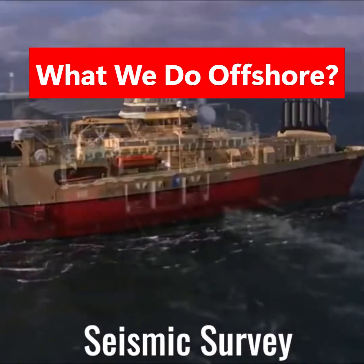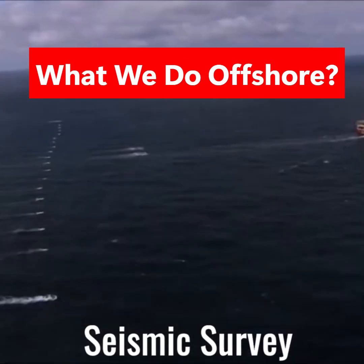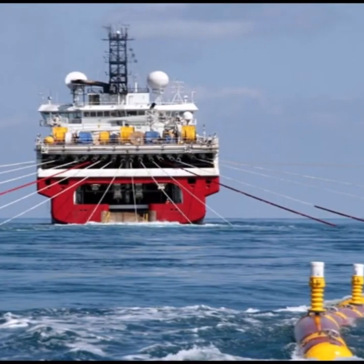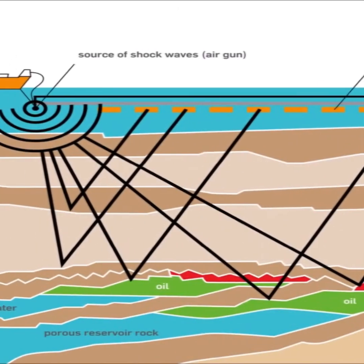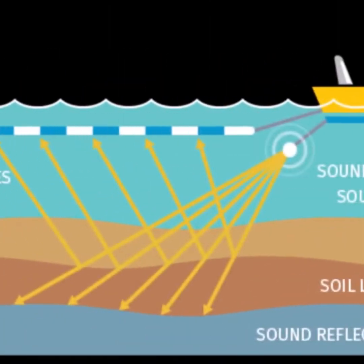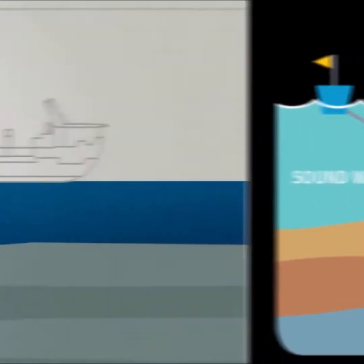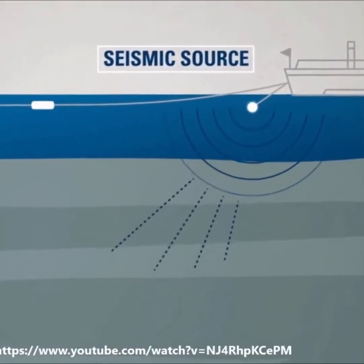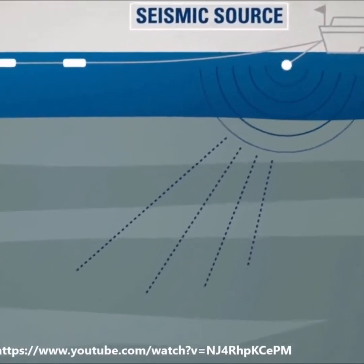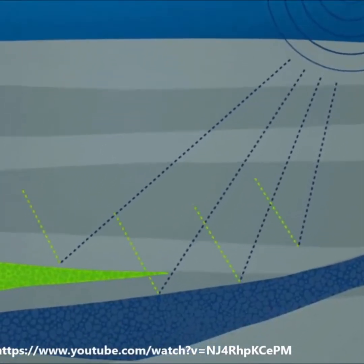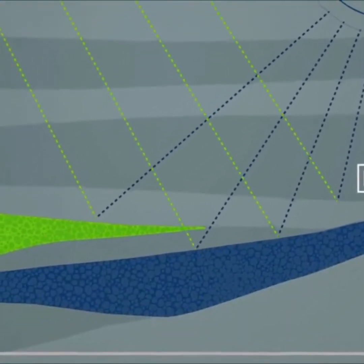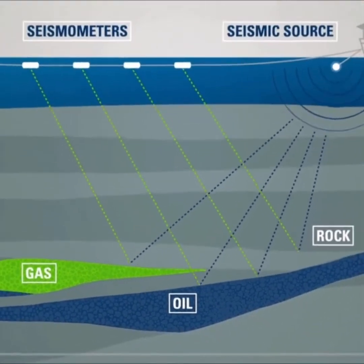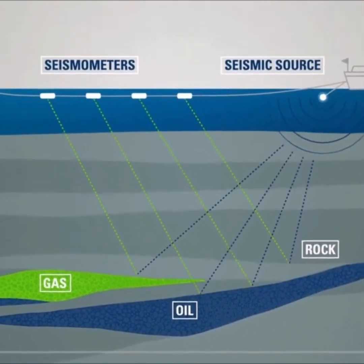It all starts with a seismic survey in a designated area. In seismic survey, a low-frequency pulse is sent in the water. The pulse travels through the seabed and penetrates very deep. The echo or the reflections of these pulses are recorded on the vessel. These echoes help in identifying various sediments and rock layers. This data is then interpreted for a possible reservoir of oil and gas.